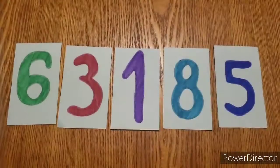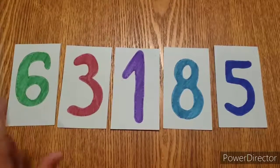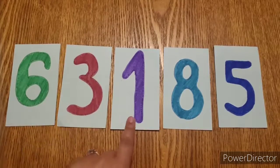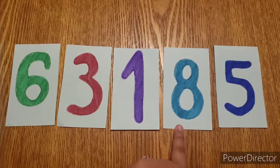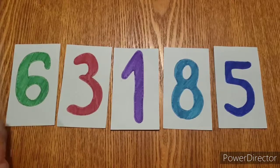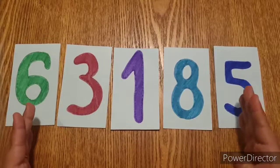Here we have 5 numbers. We have the number 6, the number 3, the number 1, 8, and 5. And we want to put them from least to greatest.